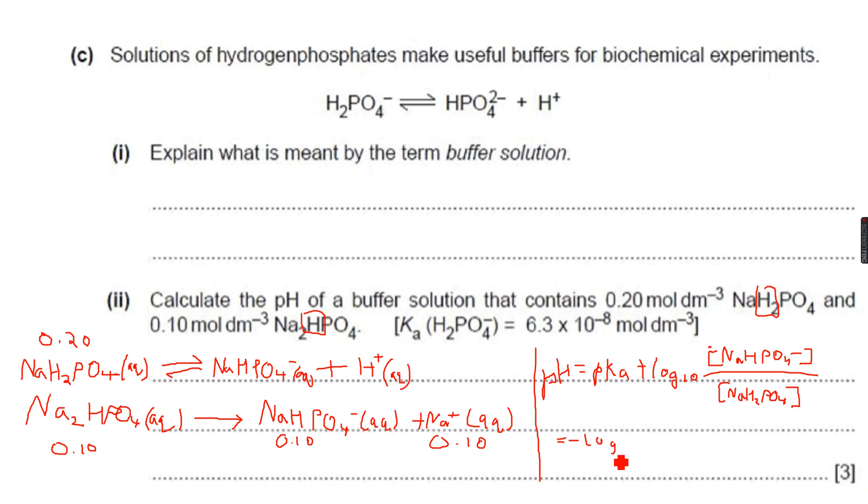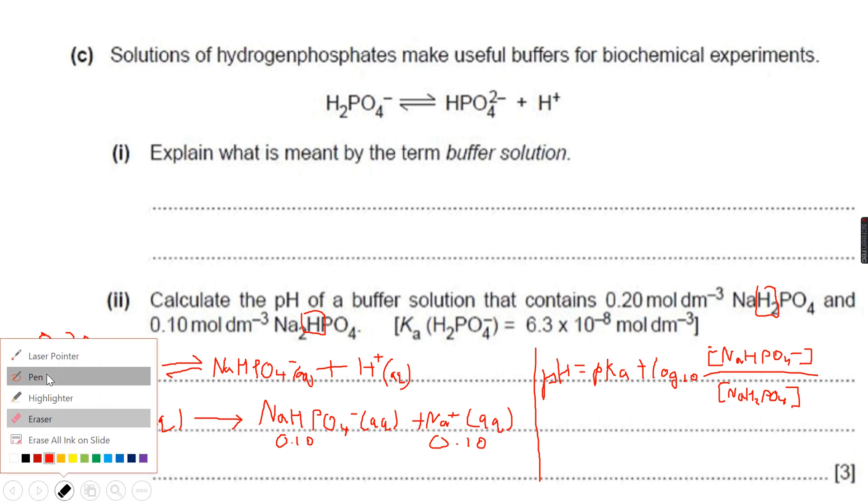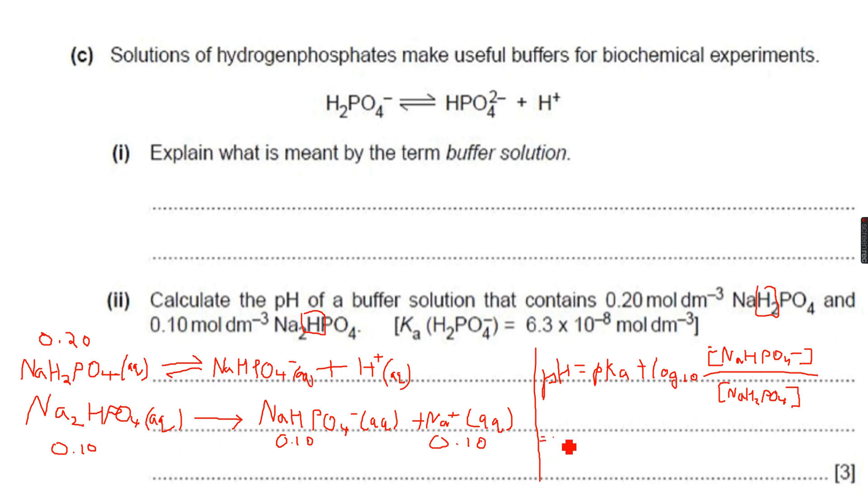So this becomes negative log10 of, in brackets, 6.3 × 10^-8. Let me write it in a proper way because it's looking too shabby here. So this will be equal to negative log10, brackets, the value of Ka which is 6.3 × 10^-8 plus log10...